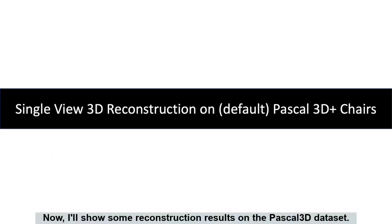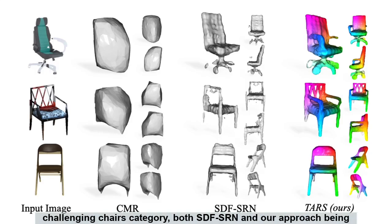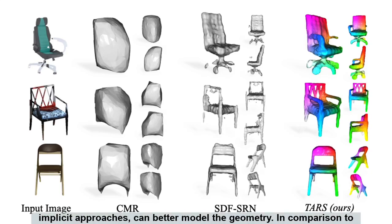Now I'll show some reconstruction results on the Pascal 3D dataset. While the mesh-based approach completely fails on the topologically challenging chairs category, both SDF-SRN and our approach, being implicit approaches, can better model the geometry.